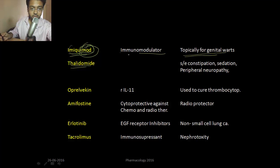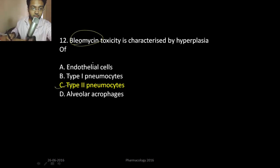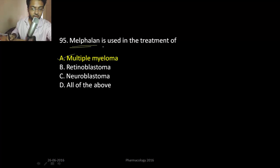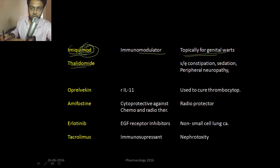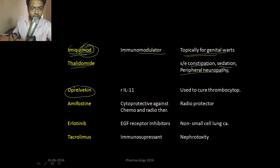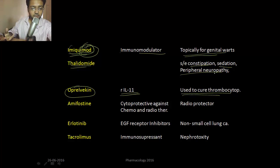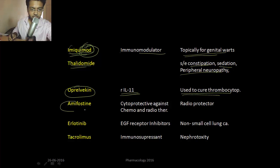Thalidomide was used for multiple myeloma but is no longer used; the drug of choice now is melphalan. The most common side effects of thalidomide are constipation, sedation, and peripheral neuropathy. Oprelvekin is a recombinant interleukin-11 agent used to treat thrombocytopenia as a side effect of anti-cancer drugs, when the patient develops low platelet counts.